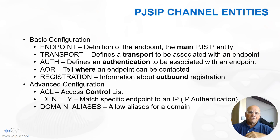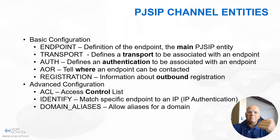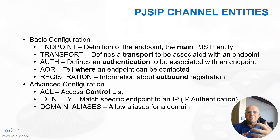Registration contains settings for an outbound registration. Under advanced configuration, you may configure an ACL — access control list — to limit the IPs allowed to connect to your Asterisk server. Identify matches a specific endpoint to an IP address for authentication, useful for IP authentication. And domain aliases allows defining aliases for a specific domain name. These various entities and options allow configuring and customizing the PJSIP channel behavior as per requirements.